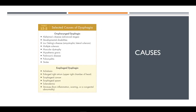Causes of dysphagia can be attributed to physiological or neurological problems. Some of the most common causes are strokes and degenerative muscle loss that occurs with multiple sclerosis, muscular dystrophy, or Parkinson's. Certainly, cancer and radiation of the esophageal area can also create changes to the swallowing function.